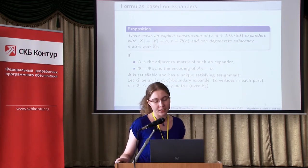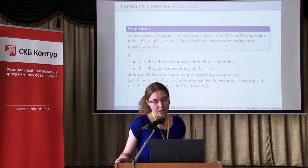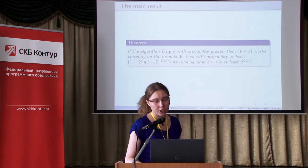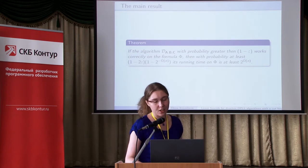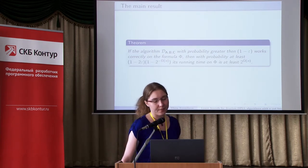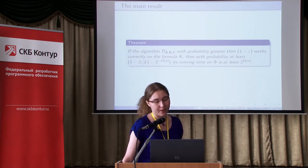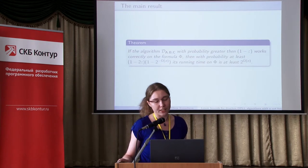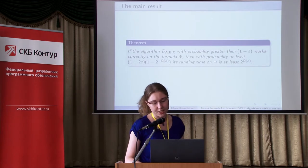We encode A multiplied by x equals b, where b is an arbitrary vector. If A is non-degenerate, such a formula is satisfiable and has a unique satisfying assignment. On such a formula, if the algorithm characterized by A, B, and C works correctly with probability greater than 1 minus y, then with probability at least 1 minus 2 times something close to 1 — that is, 1 minus 2 to the power of minus omega of n — its running time is exponential in n.